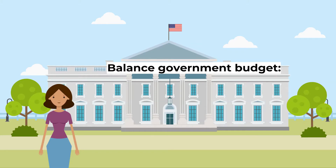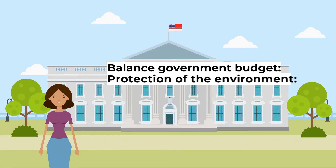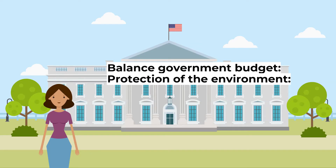Balancing the budget allows governments to borrow cheaply in the future should they need to and makes repayments easier. Another objective may be the protection of the environment, which aims to provide long-run environmental stability. It ensures resources used are not exploited, such as oil and natural gas, and that they are used sustainably so future generations can access them too. Moreover, it means there is not excessive pollution.